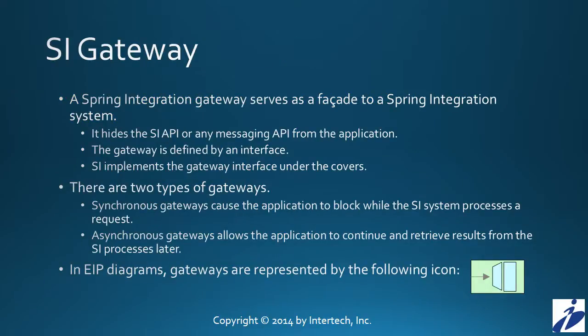In today's tutorial, we're going to look at gateways. A gateway is Spring Integration's mechanism to loosely couple your application or one of your application components from the Spring Integration API, or for that matter, any messaging API system. The gateway is simply an interface, and that interface will be implemented by Spring Integration underneath the covers. There are two different types of gateways in Spring Integration: synchronous gateways and asynchronous gateways. Synchronous gateways cause your application to block and wait for the Spring Integration system to return before continuing on with their processing, whereas an asynchronous gateway allows your application to keep on trucking and not have to necessarily wait for results immediately from the Spring Integration system.